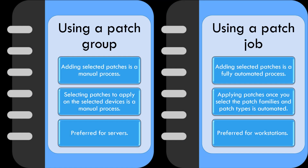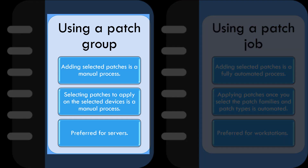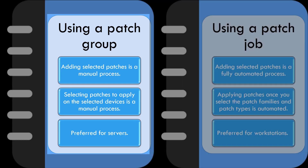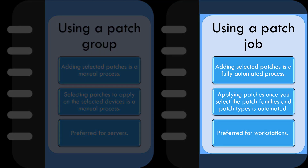Patch Management offers two ways to deploy patches: using a patch group, and using a patch job. If you are using a patch group, adding selected patches and selecting patches to apply on the selected devices are manual processes. It is preferred for servers. If you are using a patch job, adding selected patches and applying patches once you select the patch families and patch types are automated processes. It is preferred for workstations.